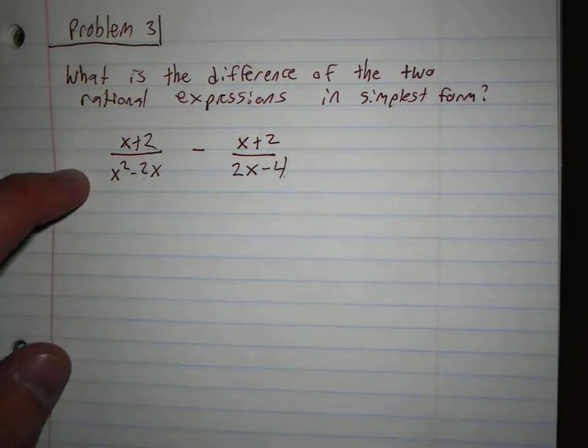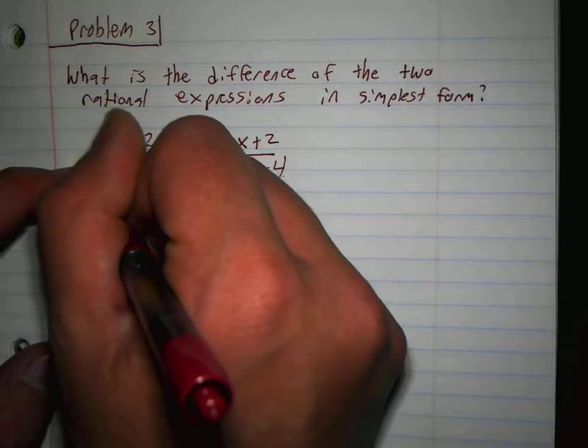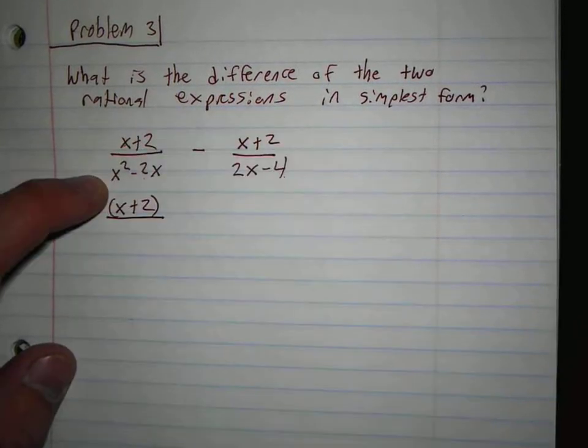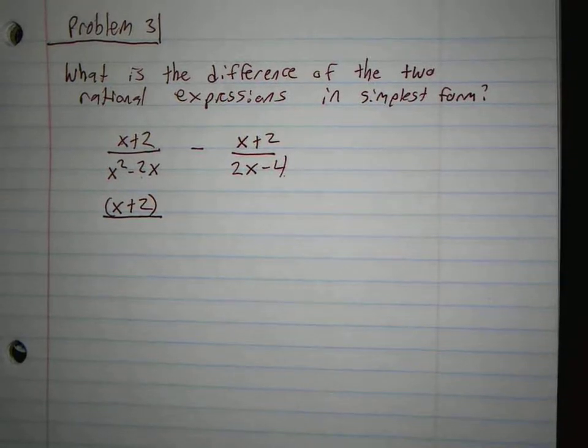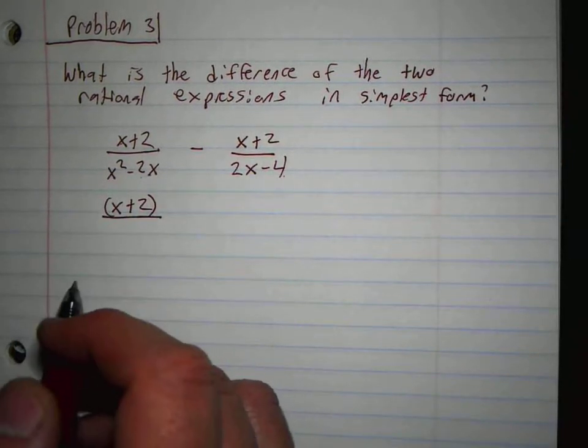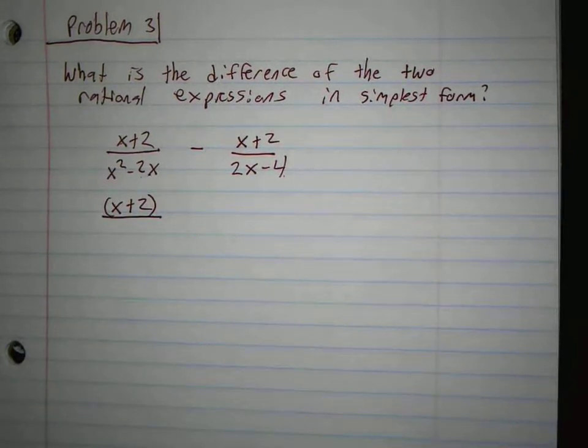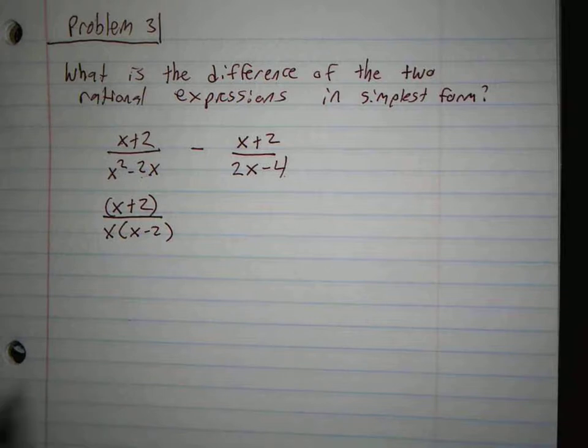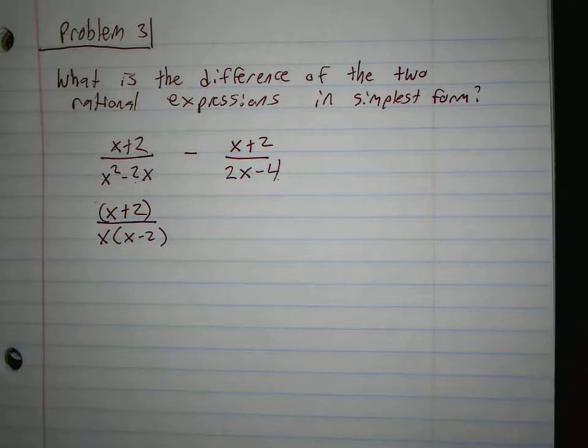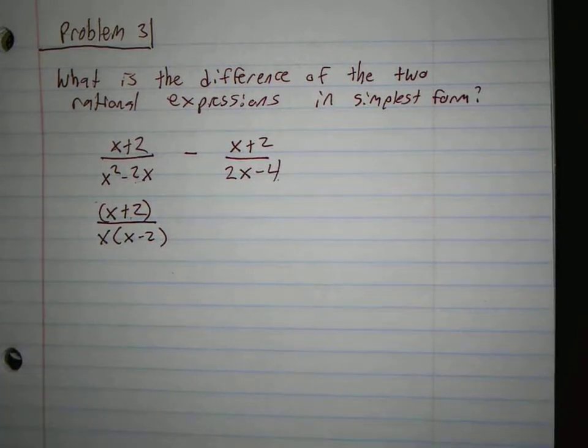However, if we factor first, x squared minus 2x, what goes into that? How do I factor this? Take out an x. I also look, this makes it even easier. If I could cancel those, I would, but that's a plus, that's a minus, so I can't.